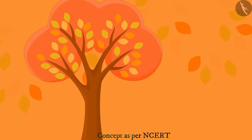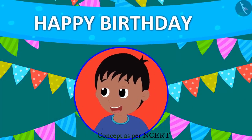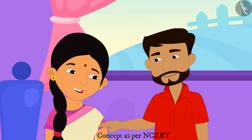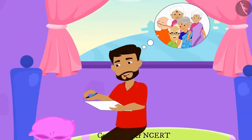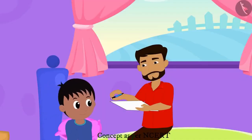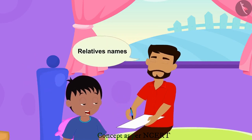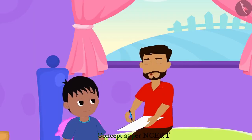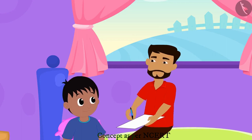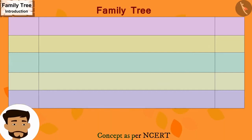Hello children, in this video we will learn about the family tree. Raju's 10th birthday is coming. His parents have decided to celebrate in a grand manner and are making a list to invite all their relatives. Father, what are you doing? I am making a list of the names of all my relatives. So many people — what do I address them as? They all have a different relationship with you, Raju, so you cannot address them only in one way. Let me explain. Raju's father started making his family tree on a paper.